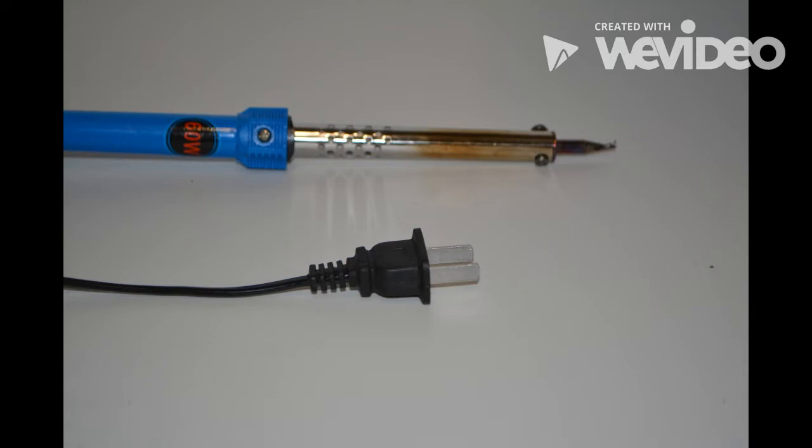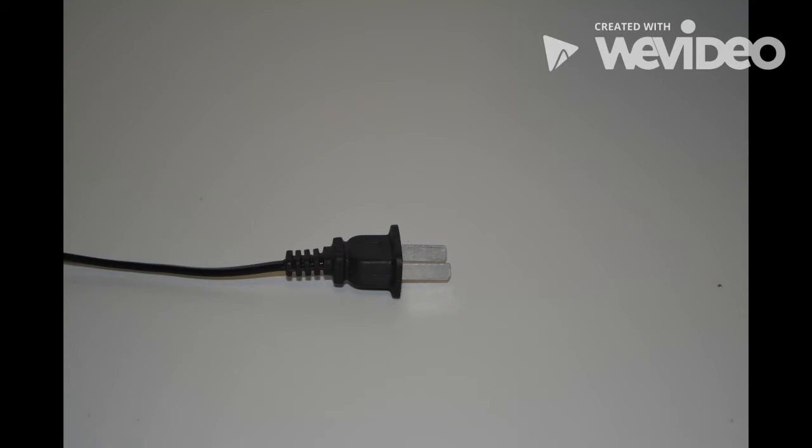Starting things, let's look into build quality. The entire soldering iron is made out of plastic except the iron tip. The plastic joints are not properly cut and are sharp at some places.